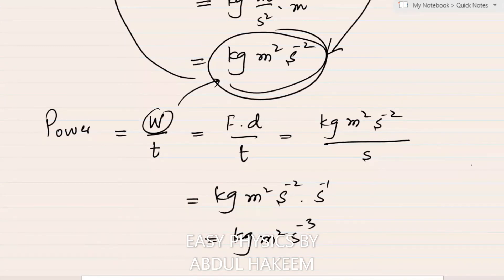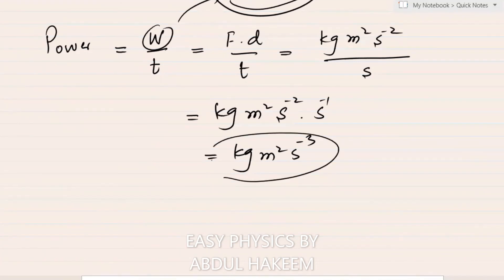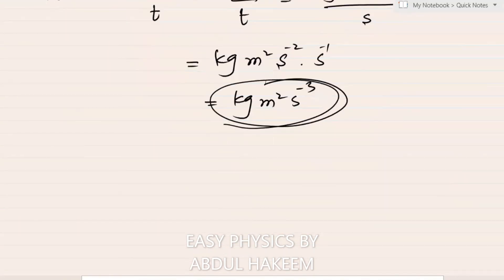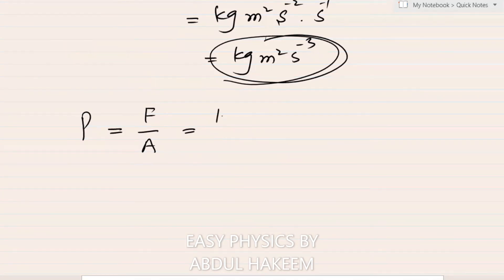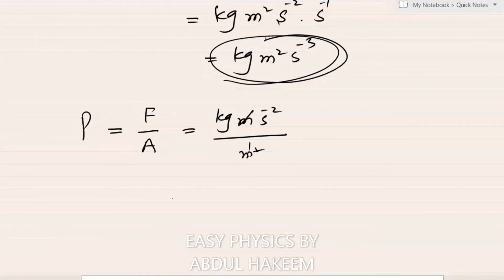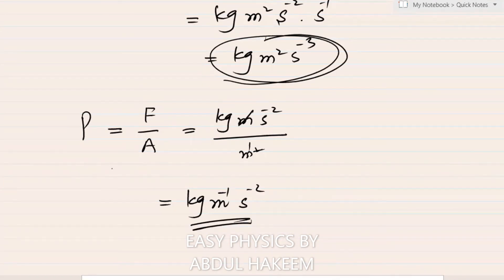For pressure: pressure = force / area, measured in Pascal (SI unit). The base unit is derived from force base unit (kg·m·s⁻²) divided by area (m²). One metre cancels, giving kg·m⁻¹·s⁻².